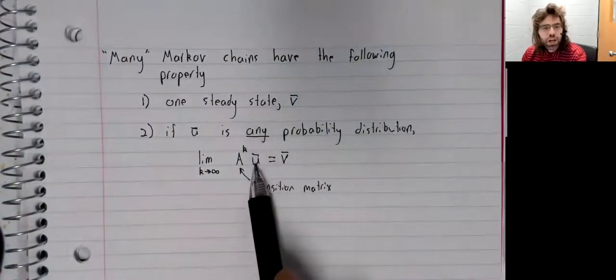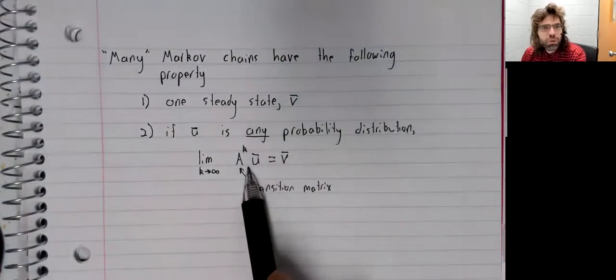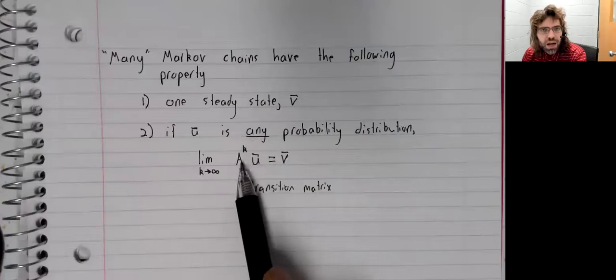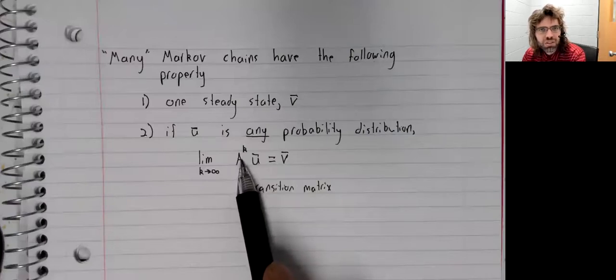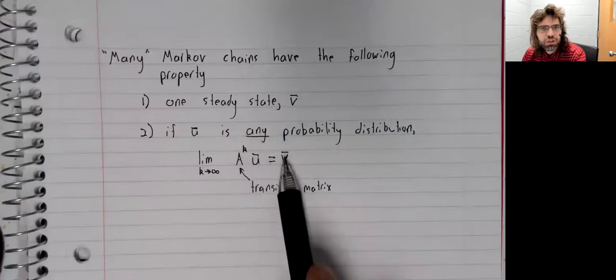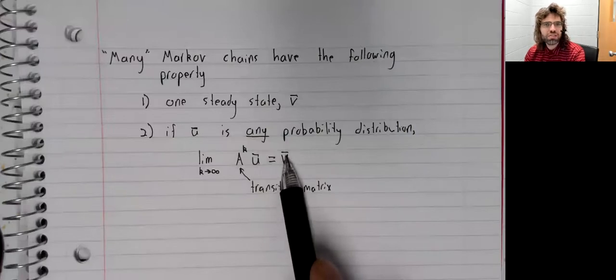In other words, no matter what your initial probability distribution is, as time passes and you repeat the transition from state to state over and over again, your probability distribution is getting closer and closer to the steady state.